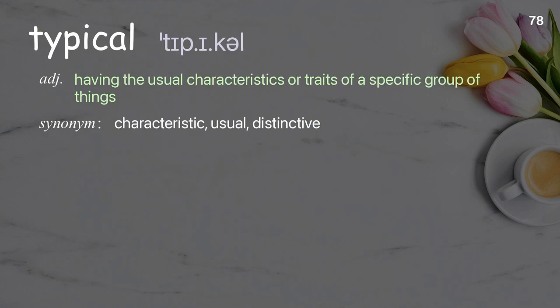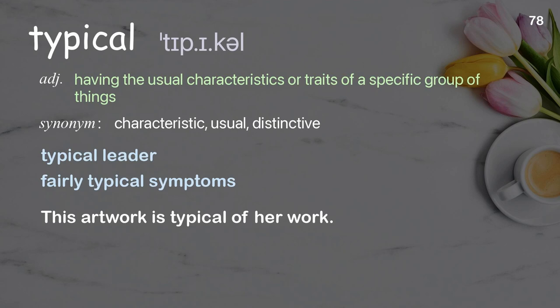Typical. Having the usual characteristics or traits of a specific group of things. Examples: typical leader, fairly typical symptoms. Sentence: This artwork is typical of her work.